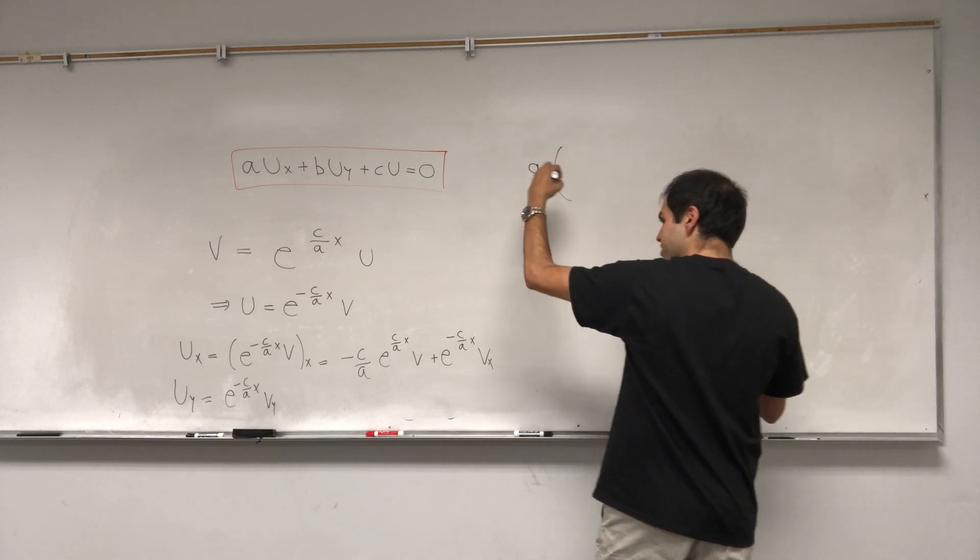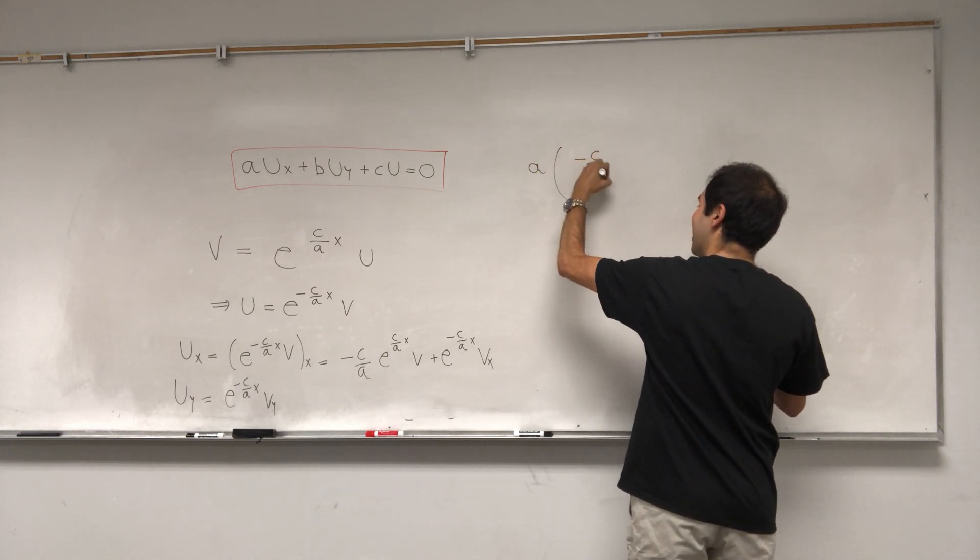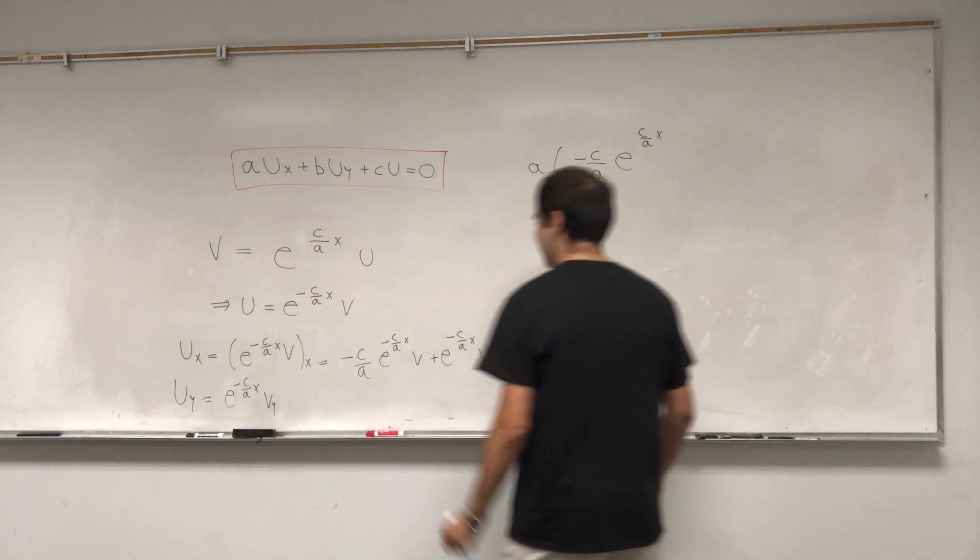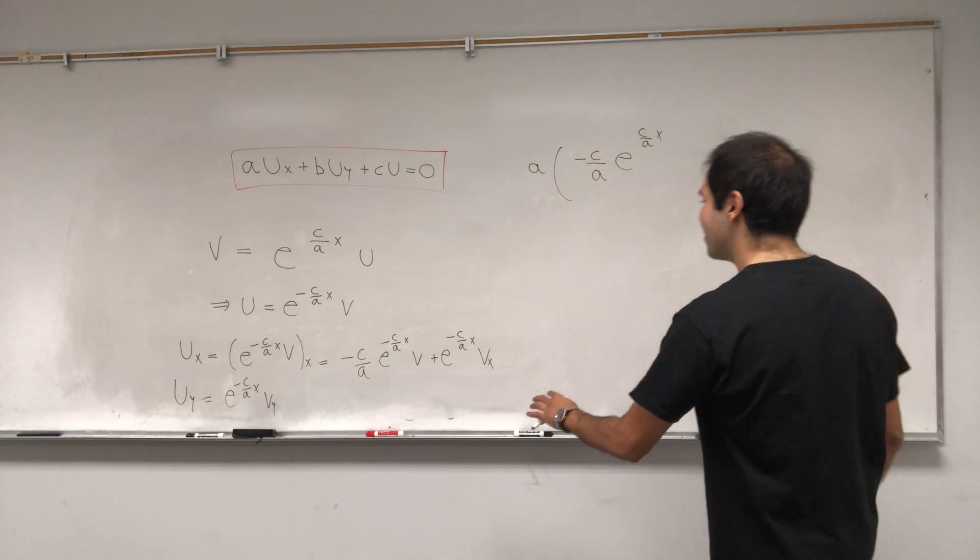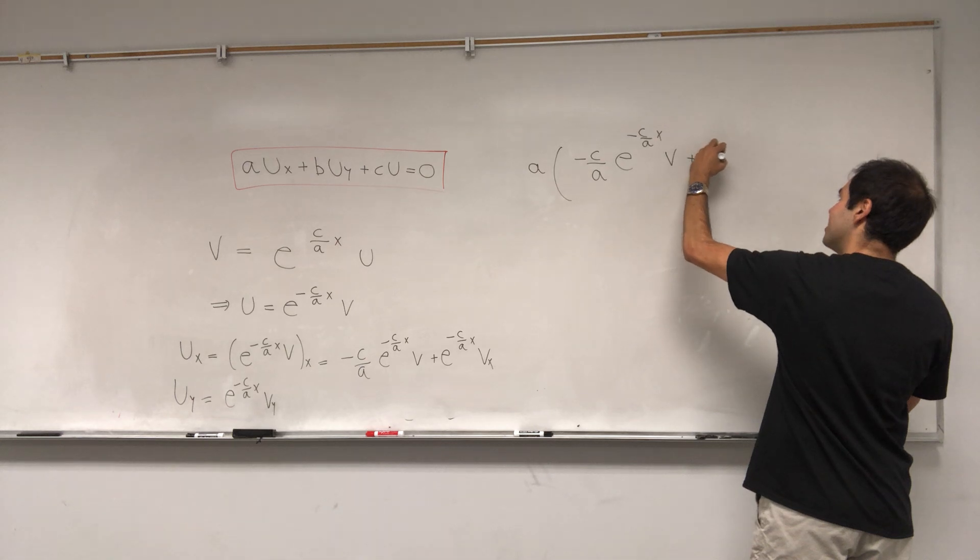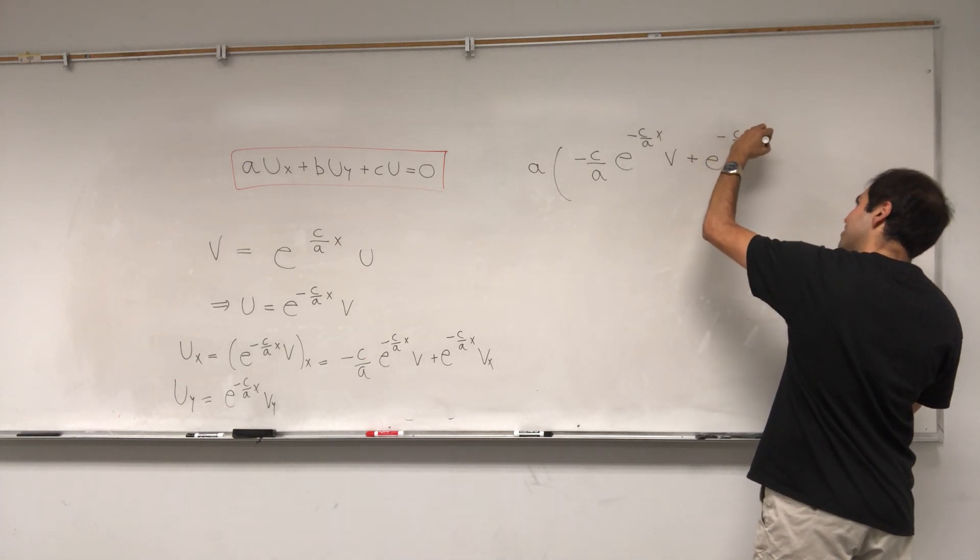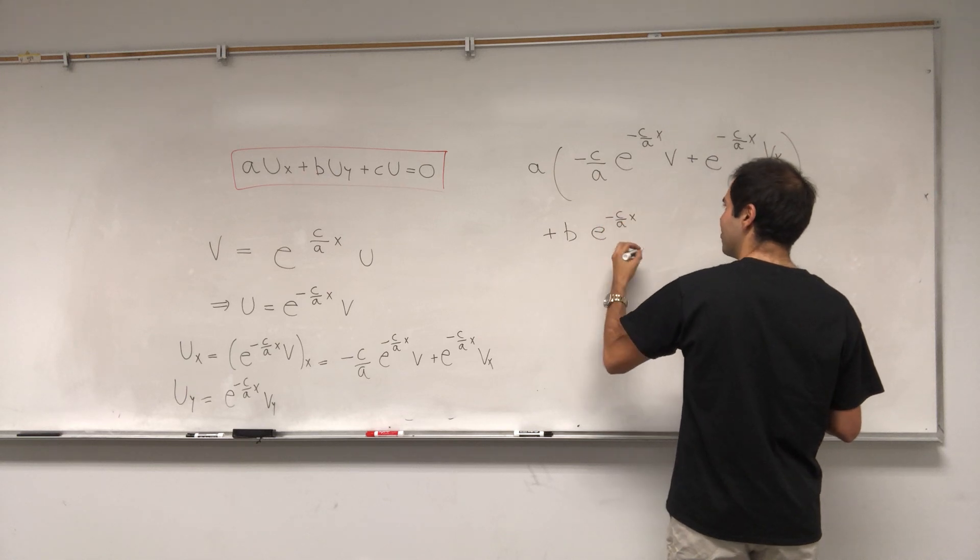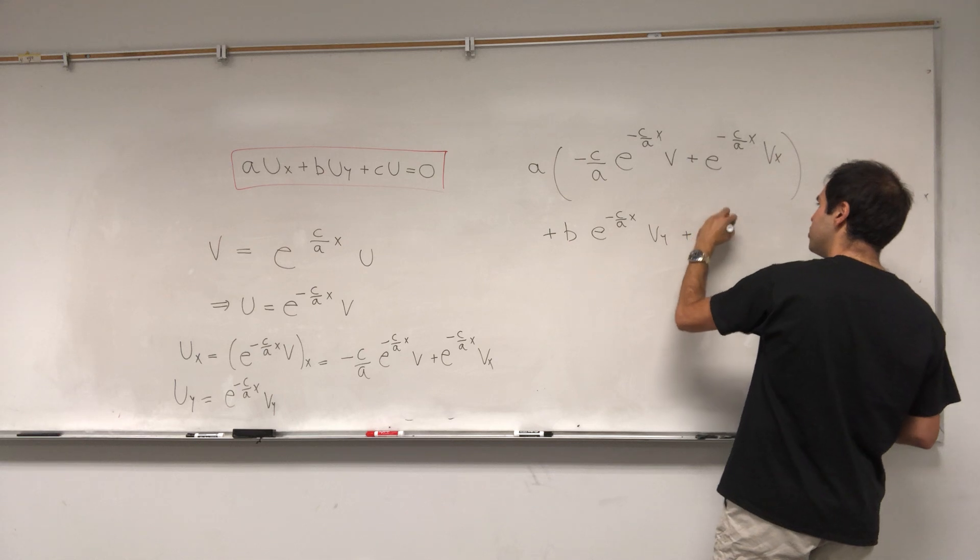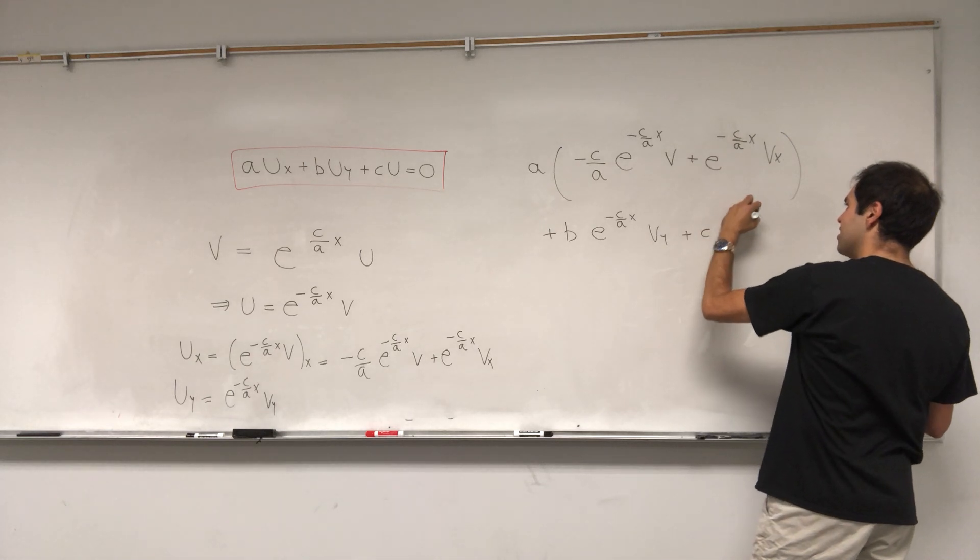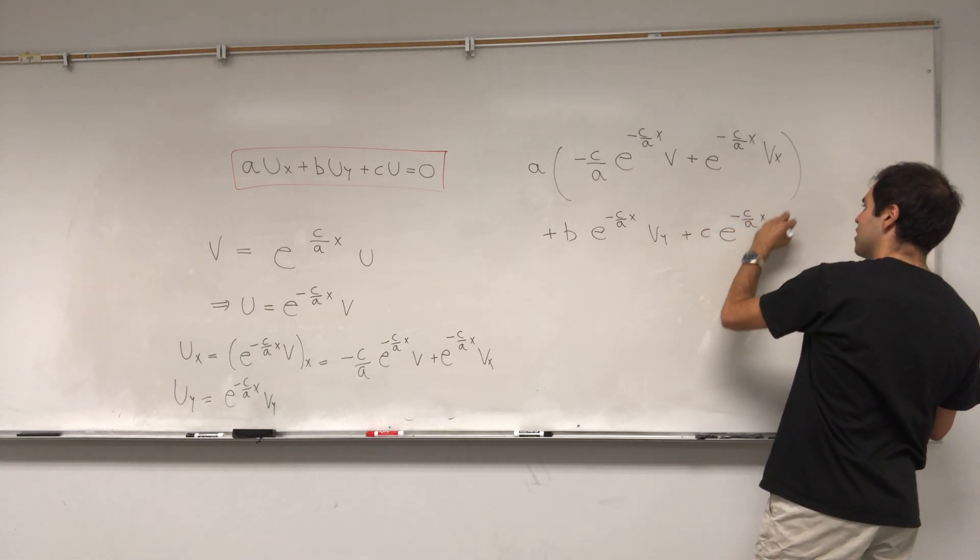So AUX becomes A times minus C over A, E to the minus C over AX. There was a minus, sorry. There you go. Where did that go? So we have this. And then, so E to the minus C over AXVX. And then plus B times E to the minus C over AXVY. Plus CU, I guess U is again, so U is E to the minus C over AXV equals 0.